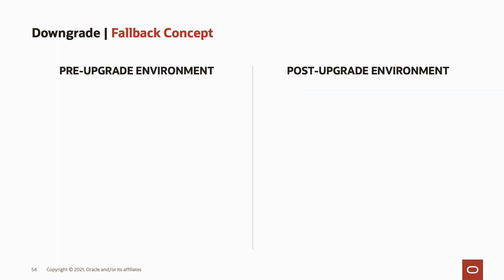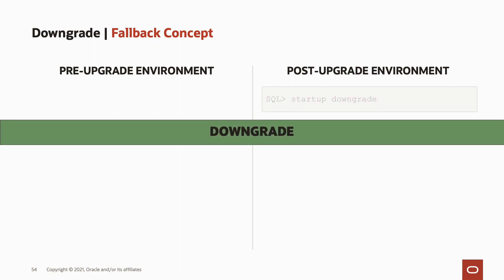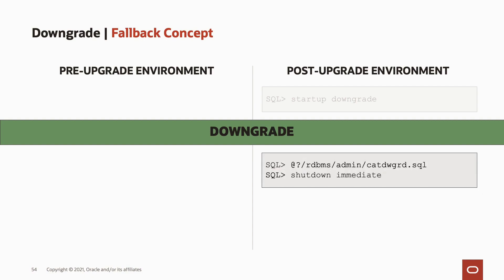This slide describes the flow of actions for a downgrade, with the source environment on the left and the environment to which you upgraded on the right. To perform a downgrade, first on the upgraded database on the right, you start up in downgrade mode by executing the command startup downgrade, which is a special command for database downgrades. Then you initiate the downgrade process. The downgrade script, catdowngrade, will revert the changes in the dictionary, which completes pretty fast. When that's done, you perform a shutdown immediate.